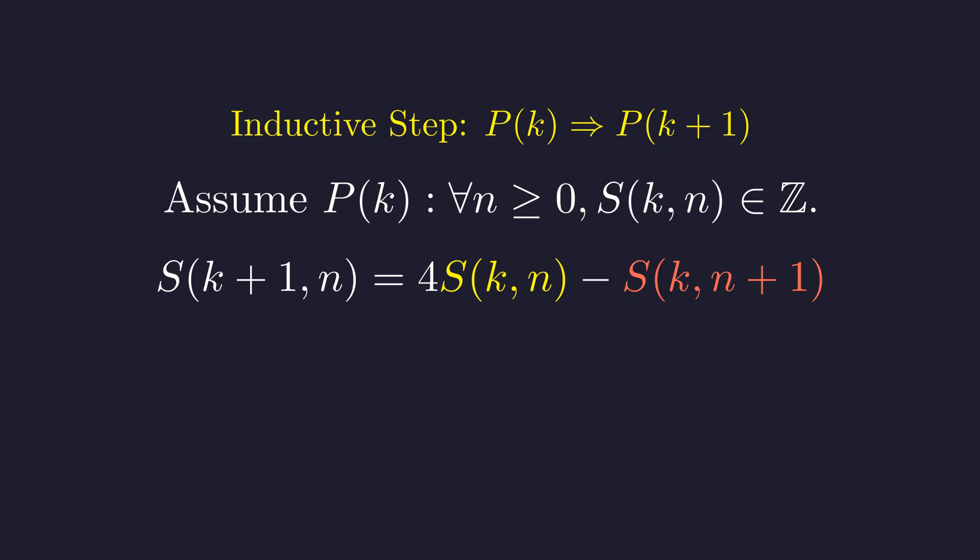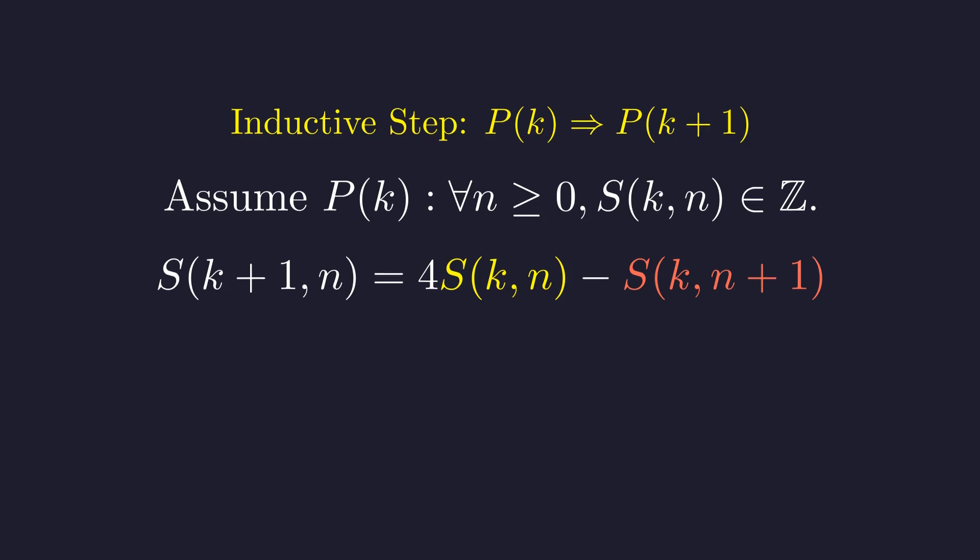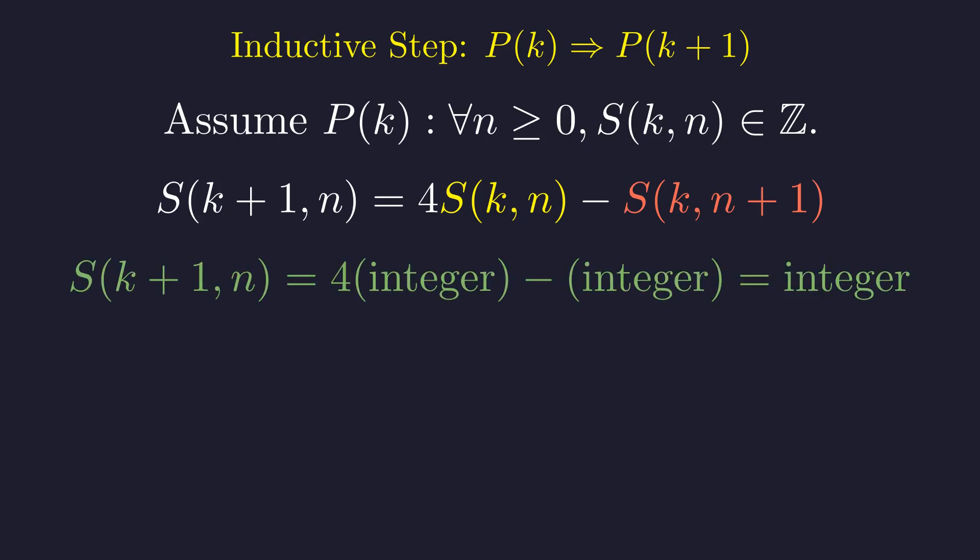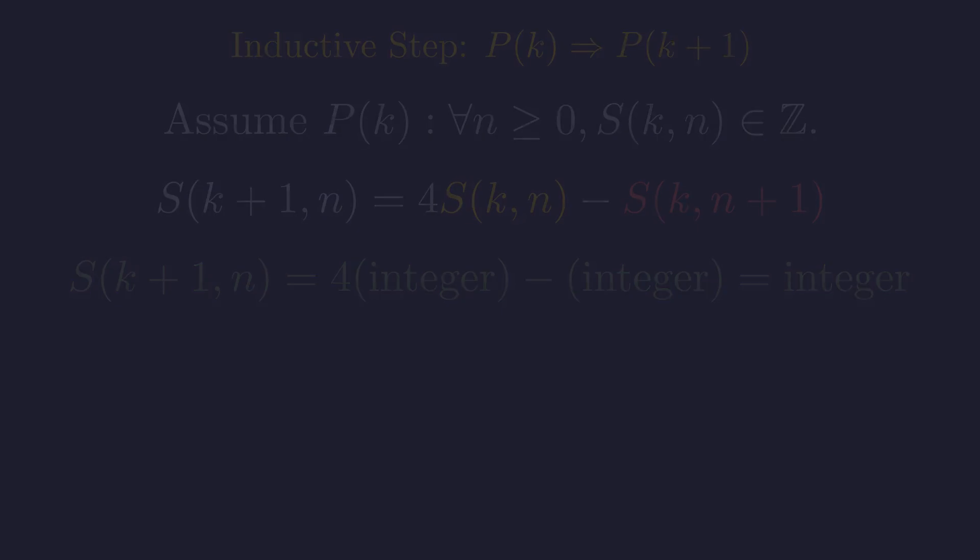This first one is an integer, and since our hypothesis holds for all values of n, this second one is also an integer. So we have 4 times an integer minus another integer. Since integers are closed under these operations, this whole expression is an integer. And this means row k plus 1 also consists entirely of integers.